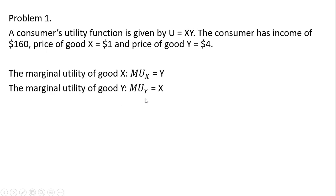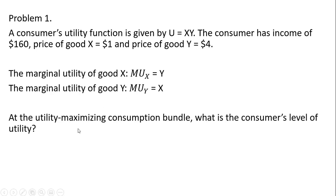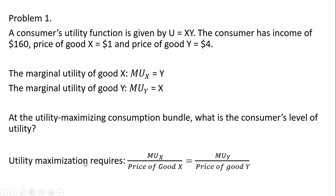These marginal utilities are derived from taking partial derivatives, but since this is algebra-based, they will just be given to us. At the utility maximizing consumption bundle, the key condition is that the marginal utility of good x divided by the price of good x equals the marginal utility of good y divided by the price of good y — the marginal utility per dollar should be equal across both goods.